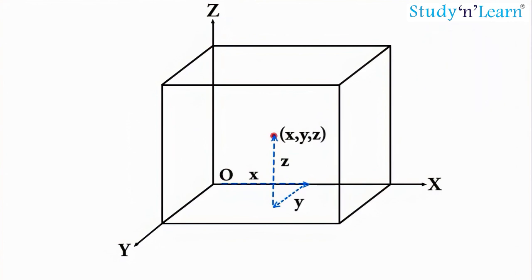If one or more coordinates of an object change with time, we say that the object is in motion.